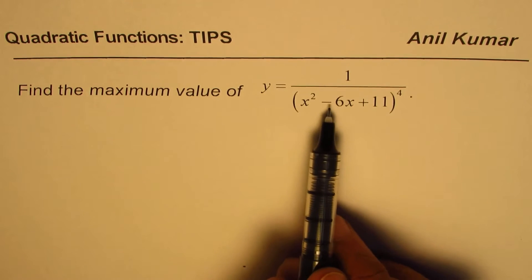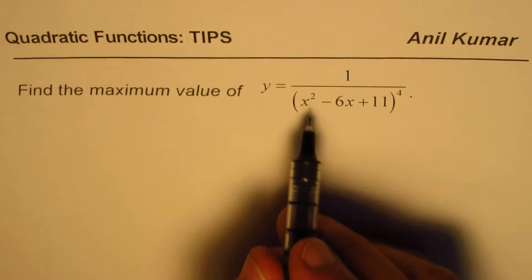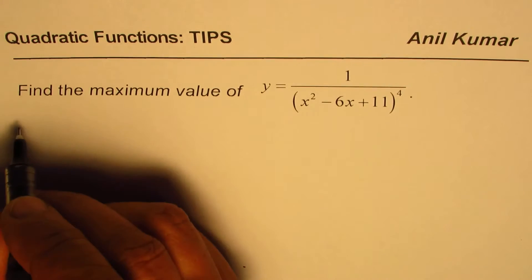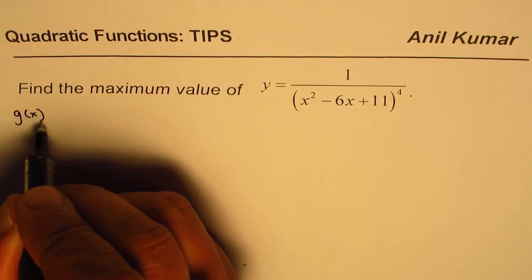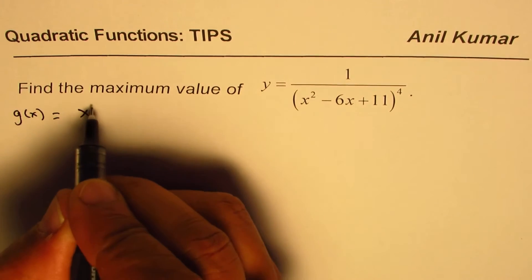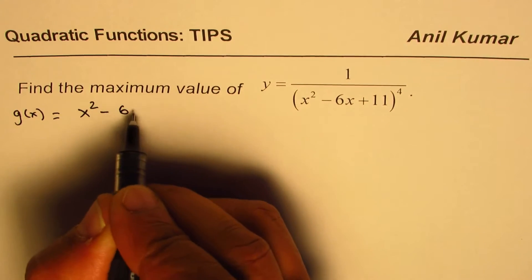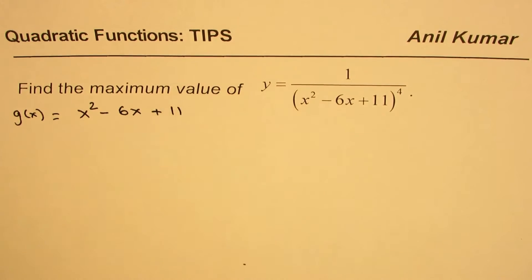Let us look at it. The denominator here is a quadratic function. So, let me write that as some value, let's say g of x. Some other function. And let me write this denominator as x squared minus 6x plus 11. So, that is a quadratic function.